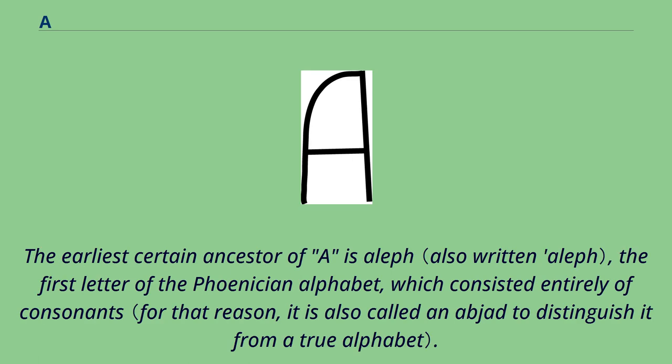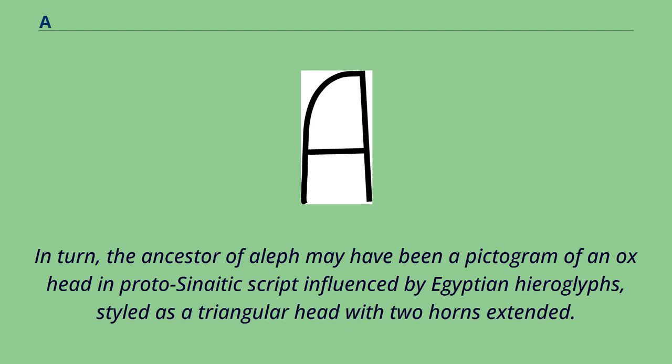The earliest certain ancestor of A is aleph, the first letter of the Phoenician alphabet, which consisted entirely of consonants. In turn, the ancestor of aleph may have been a pictogram of an ox head in Proto-Sinaitic script influenced by Egyptian hieroglyphs, styled as a triangular head with two horns extended.